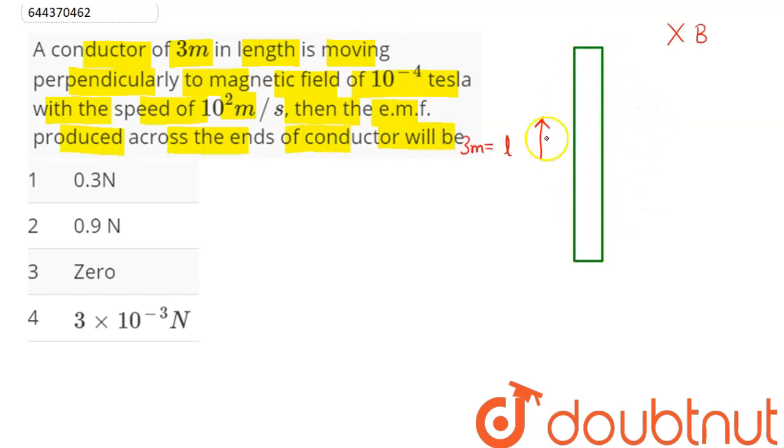So this is our rod, here length is along plus y direction, magnetic field is along minus z direction and here the question says, the rod is moving with velocity of 10 power 2 meter per second, here perpendicularly to magnetic field it is given.